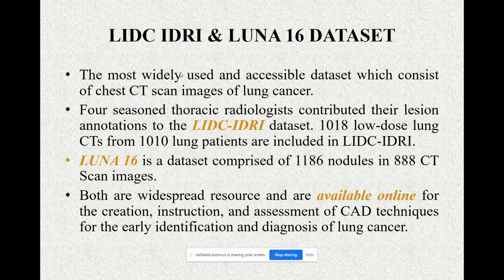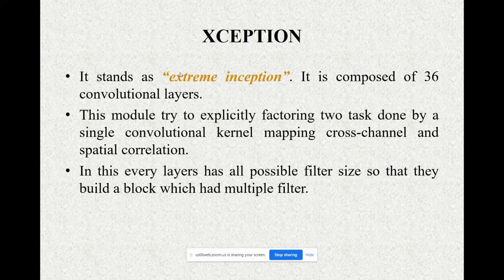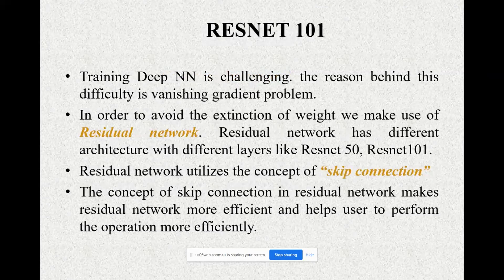The first network is Xception, which stands for Extreme Inception. It is composed of 36 convolutional layers. This module tries to exploit factoring two tasks done by a single convolution kernel: mapping cross-channel correlations and spatial correlations. Every layer has all possible filter sizes so that they build a block with multiple filters.